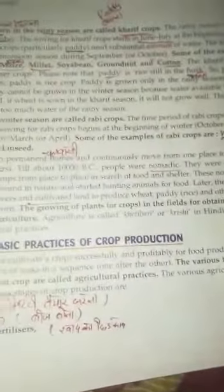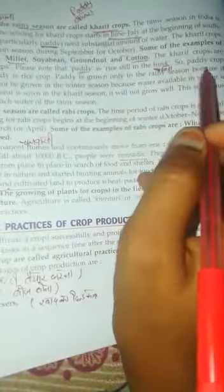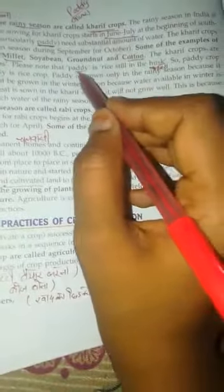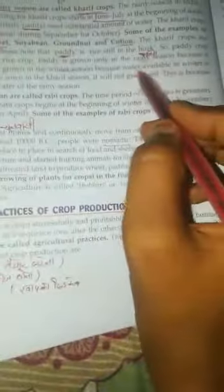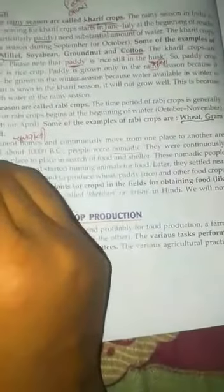Please note that paddy is rice still in the husk. This is husk. Paddy is rice still in the husk. Paddy crop gives us rice. In other words, paddy is rice crop. Paddy is grown only in the rainy season because the grain requires a lot of water. It requires a lot of water. Paddy cannot grow in the winter season because water is much less than in the rainy season.